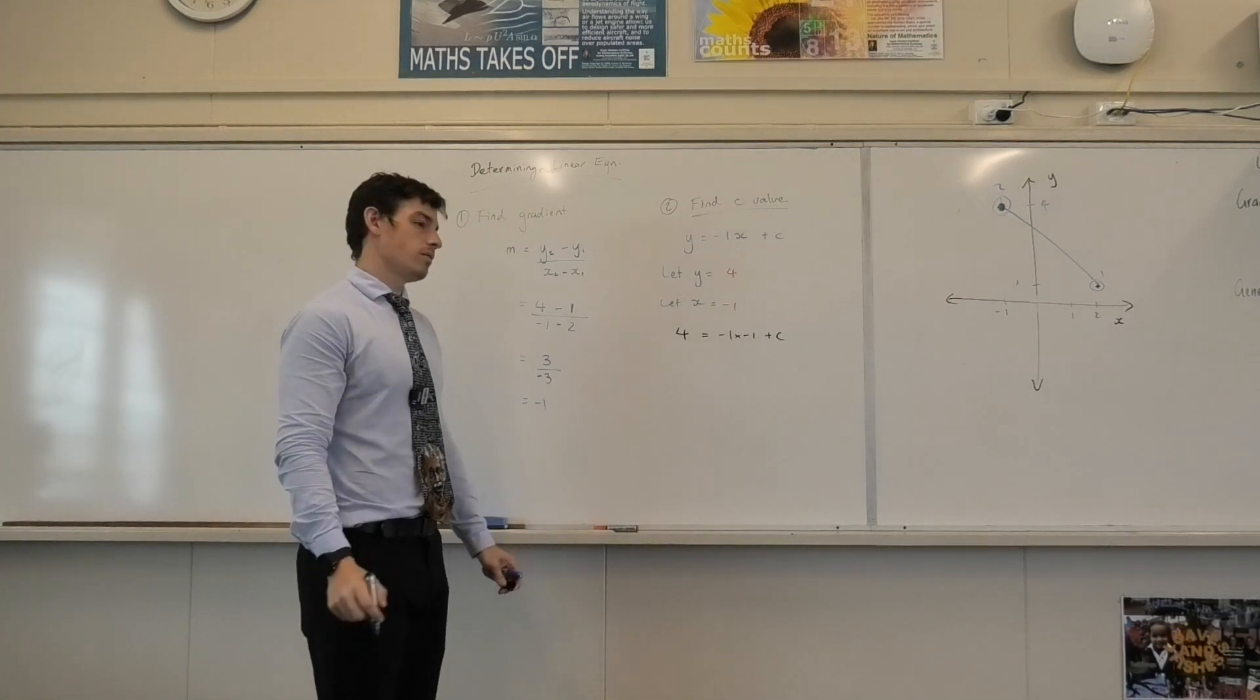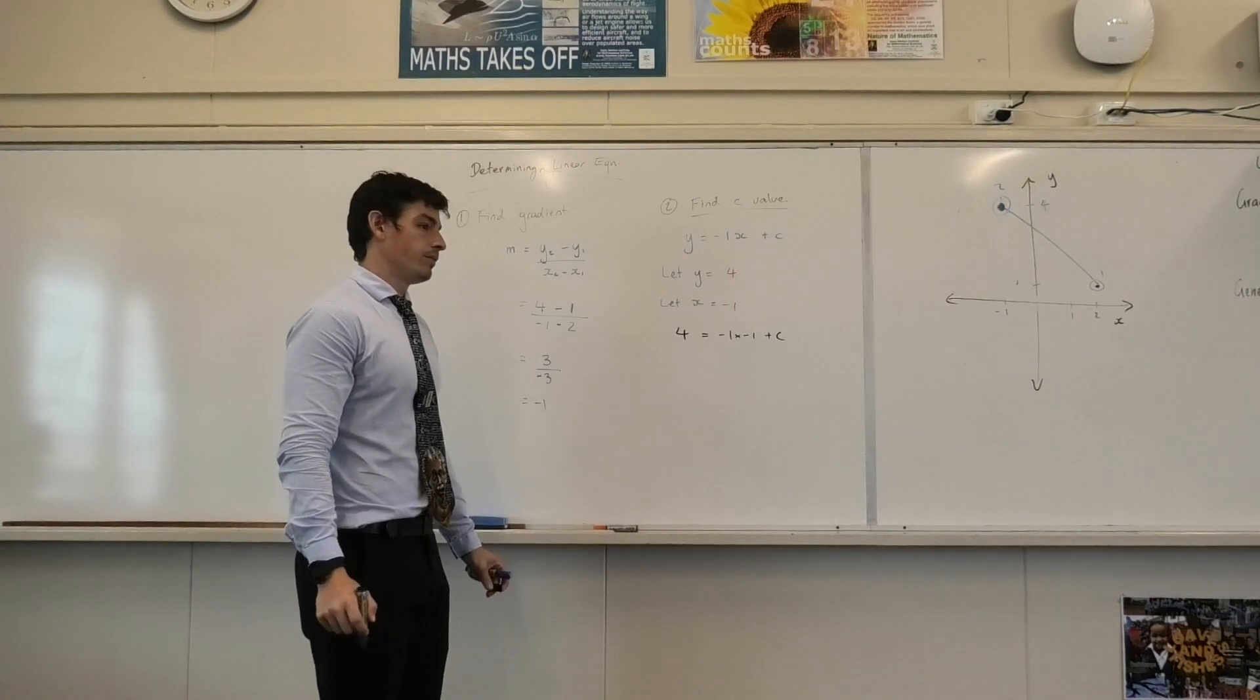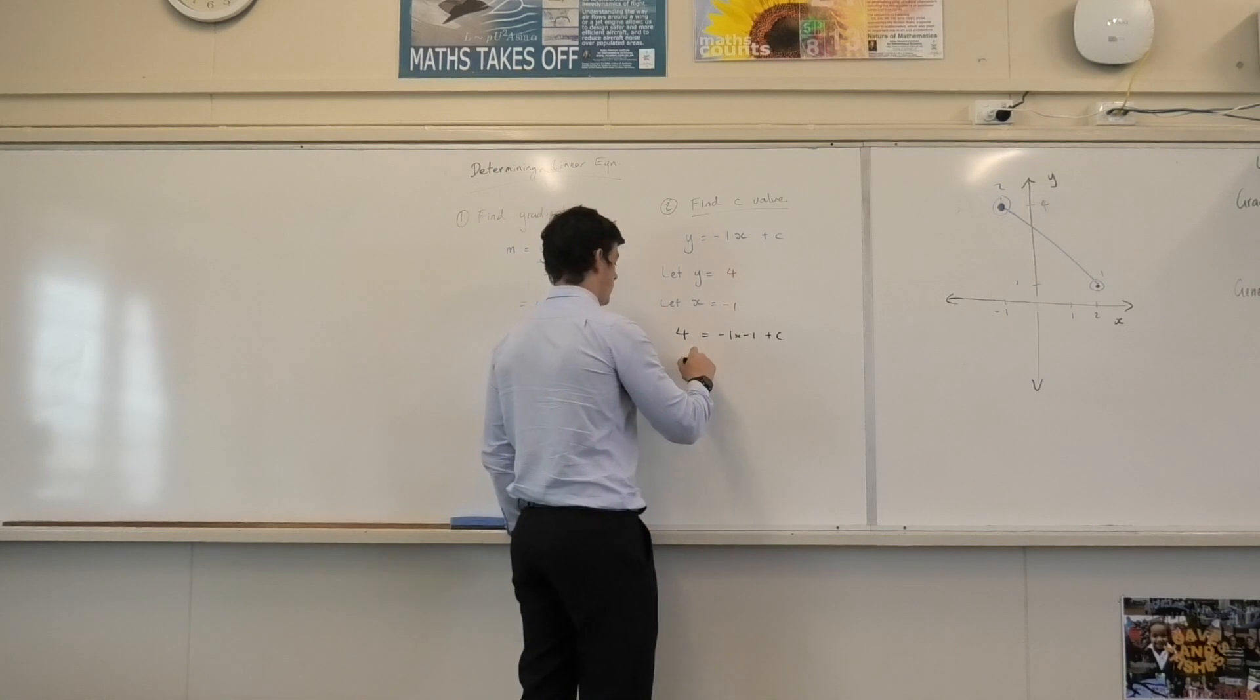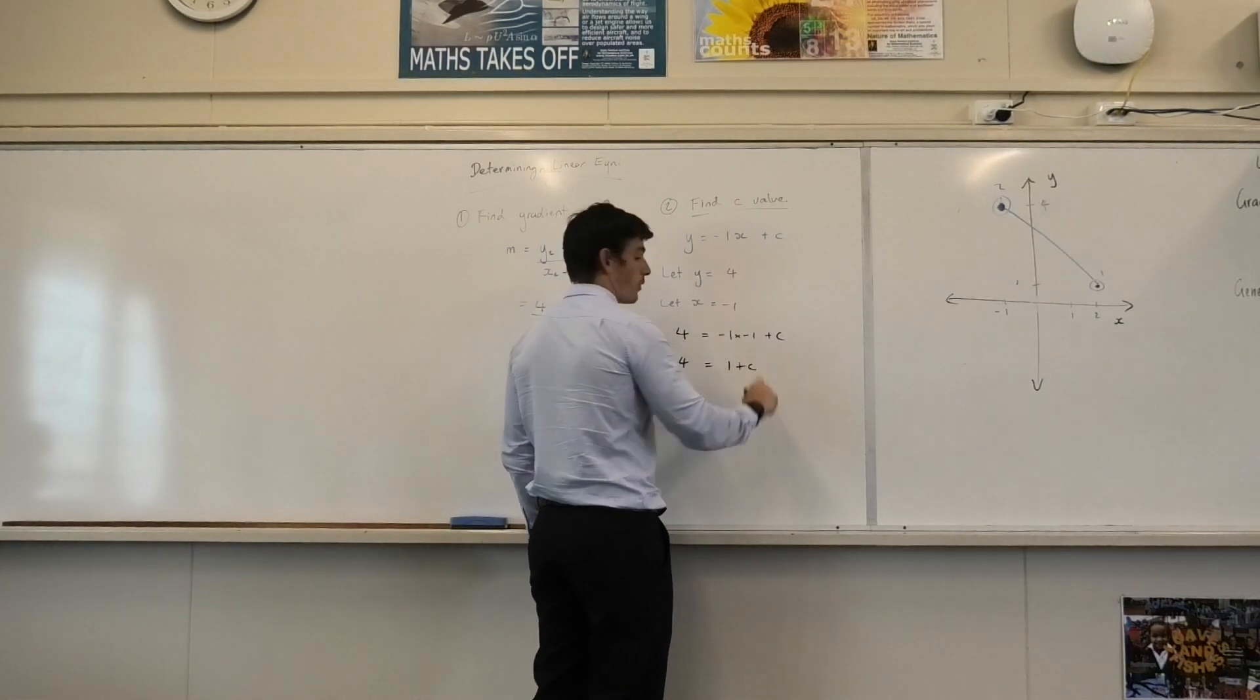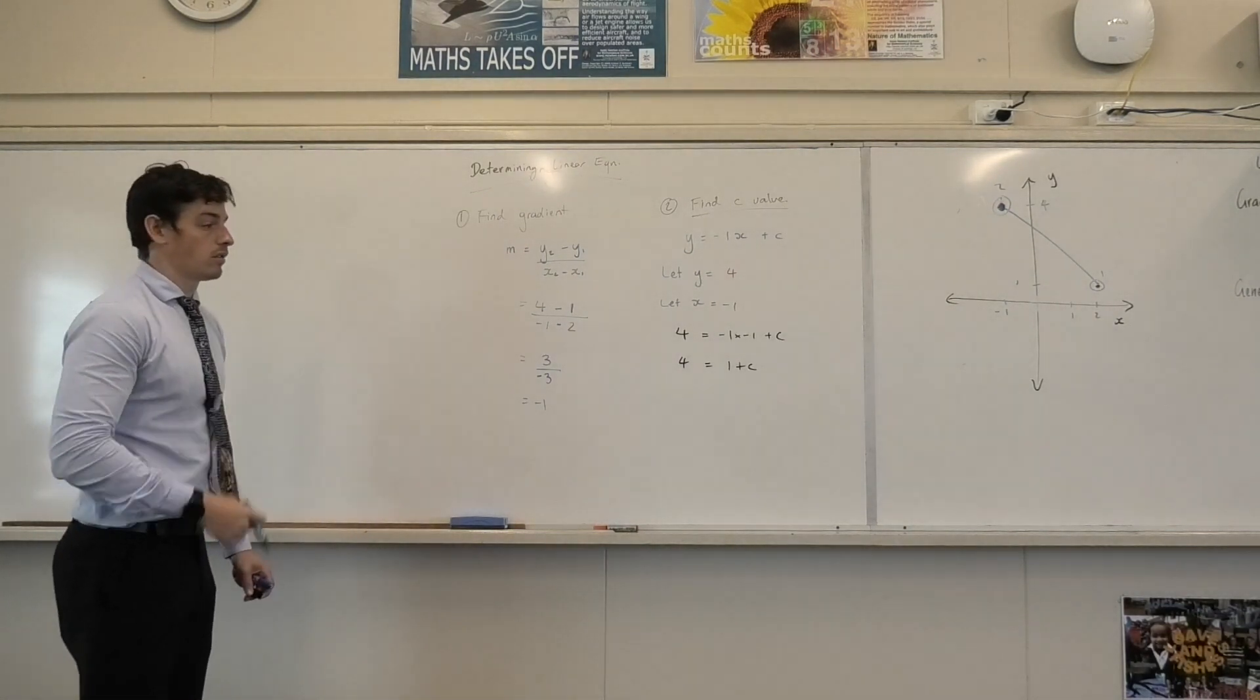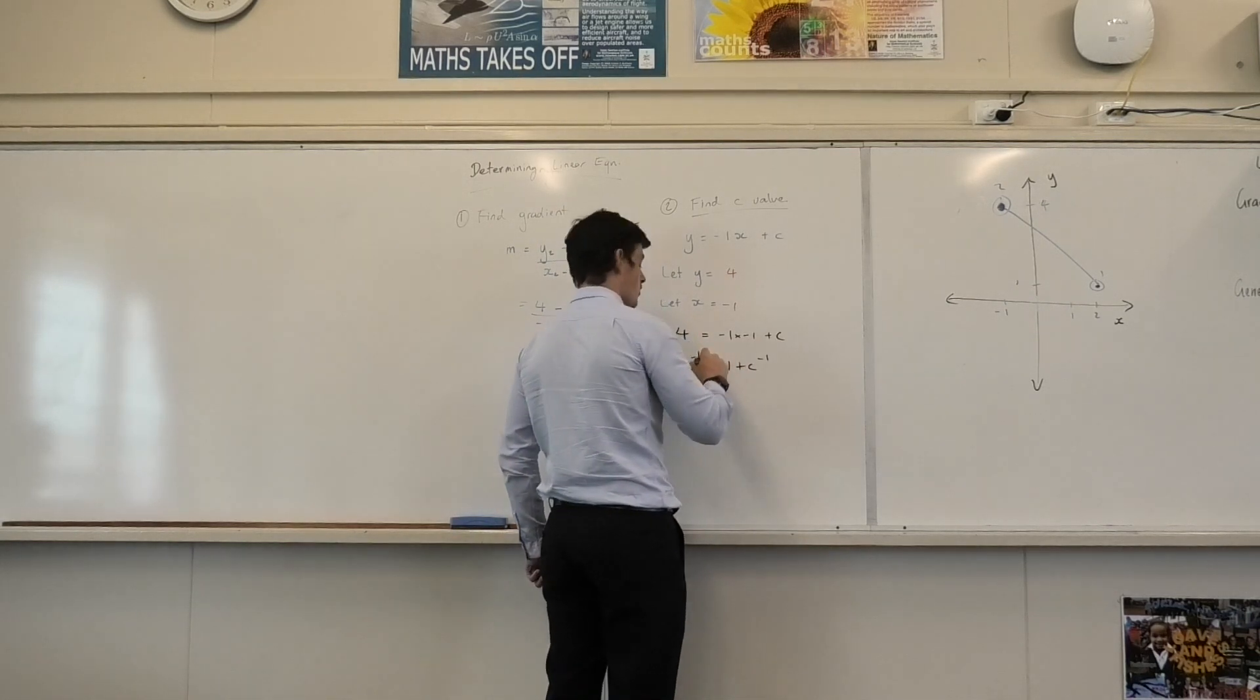So now I've got 4 equals negative 1 times negative 1 plus c. What do I do? Hayley, what do I do now? The negative 1 times negative. Which is? 1 plus c. Now what do I do? You move the 1 to the other side so you can have c. So I minus 1 from both sides, correct? Yes.